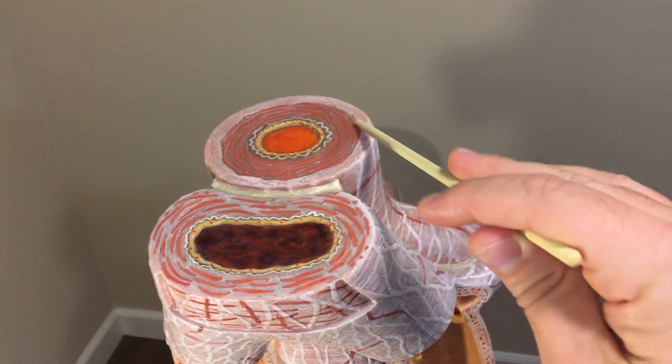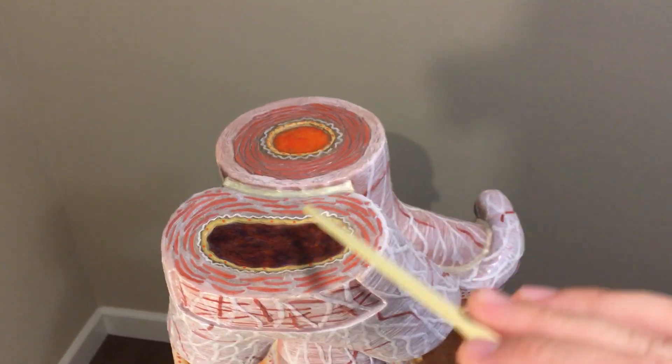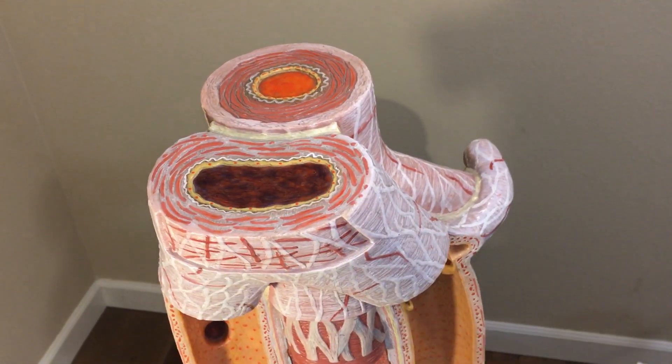It's much more round. There's much more smooth muscle here in the tunica media compared to this lumen. It's a little bit collapsed, there's less tissue.